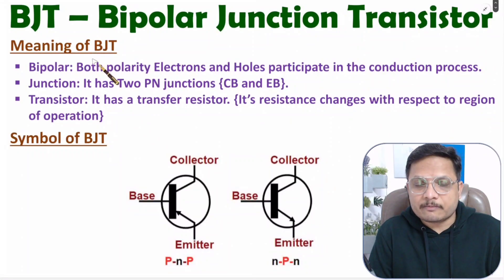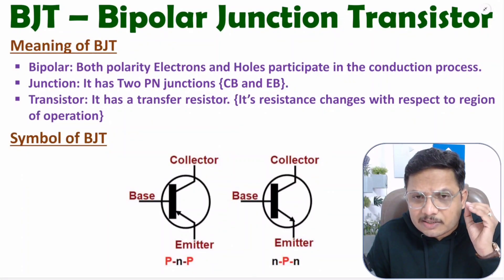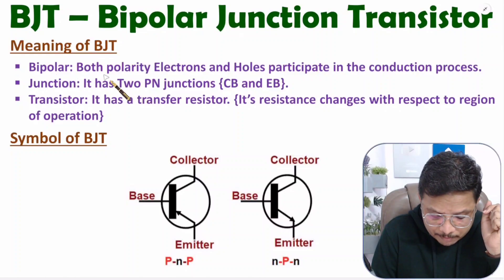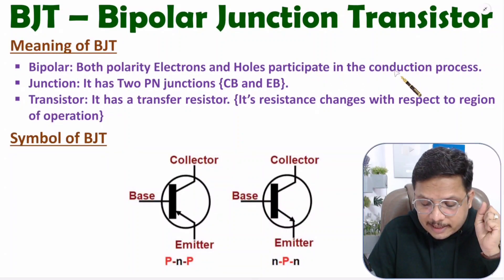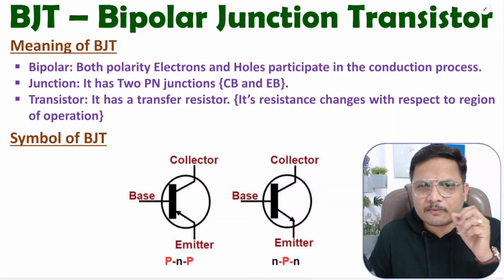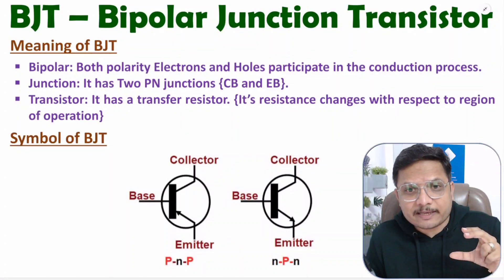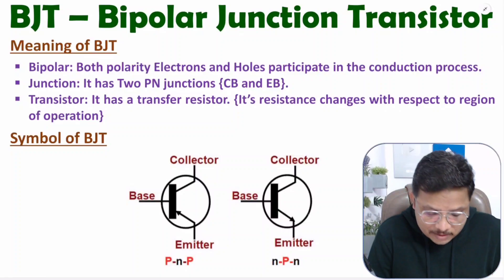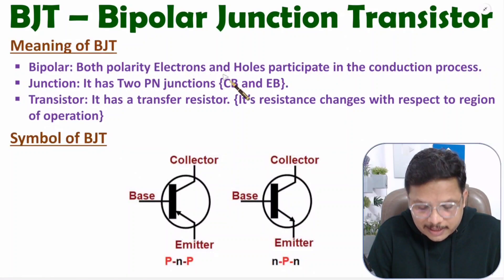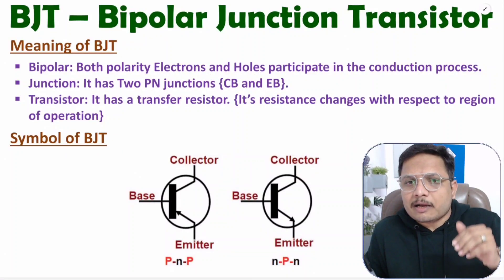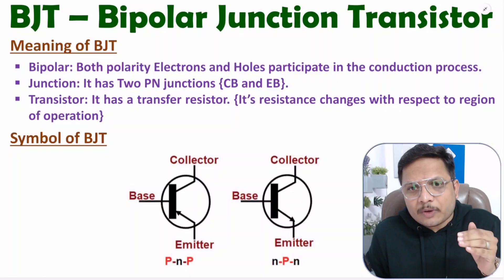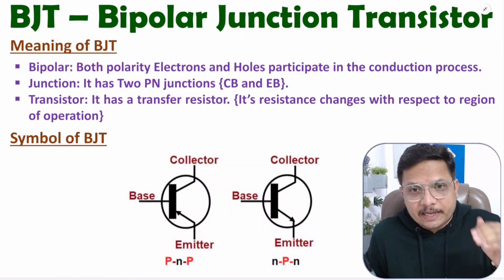BJT means Bipolar Junction Transistor. BJT is a bipolar device — both polarities, electrons and holes, participate in the conduction process. Whenever current flows through a BJT device, it happens due to both electrons and holes. In unipolar devices, current may flow due to electrons or holes only — like FETs — but BJT is bipolar.